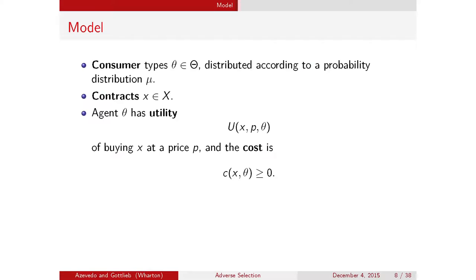Let me explain the model in one slide. There's some set of consumer types theta and a distribution over those types. There's some set of all potential contracts X. Consumer theta has utility U(X, P, theta) from purchasing contract X at price P—the contract specifies everything about an insurance policy except the premium, which is the price P. The cost for a firm to sell policy X to consumer theta is C(X, theta). If there is no adverse selection, the cost function would only depend on the contract being bought, not on the type of person buying. The reason there's potentially adverse or advantageous selection is that costs do depend on the kind of person who buys each product.